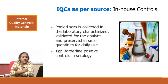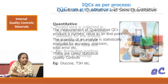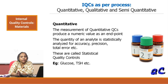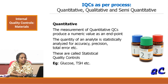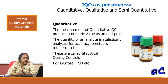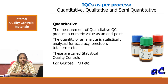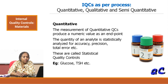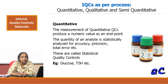Please look into that to understand more about making borderline positive controls in your laboratory. As per process, you can classify your materials as quantitative, semi-quantitative, or qualitative. For quantitative controls, the measurement produces a numerical value as the end point. The quantity of the analyte is statistically analyzed for accuracy, precision, total error, and so forth. These are called statistical quality controls. Any test with numerical values qualifies for this kind of control mechanism — examples include biochemistry, hematology cell counts, and coagulation assays, all of which have numerical values and can be subjected to the statistical quality assessment process.